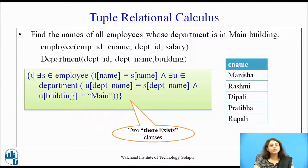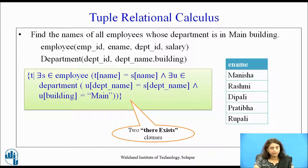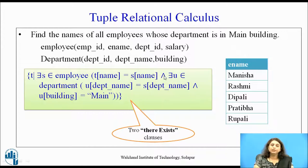This will first list employees, retrieve their department id, and for that department id, building should be 'main'. Remember: first identify how many relations are involved and which attributes you need, then write the query using TRC.